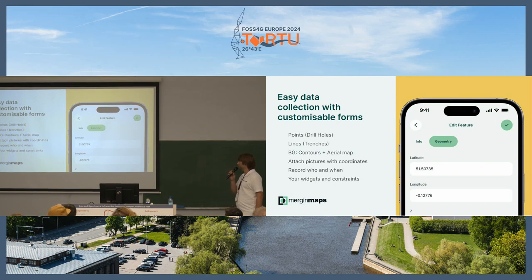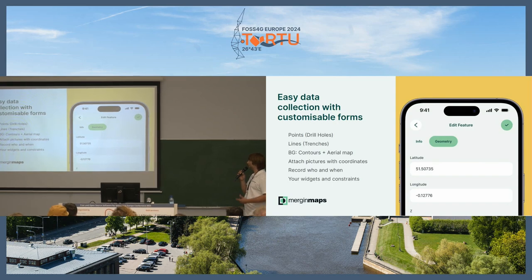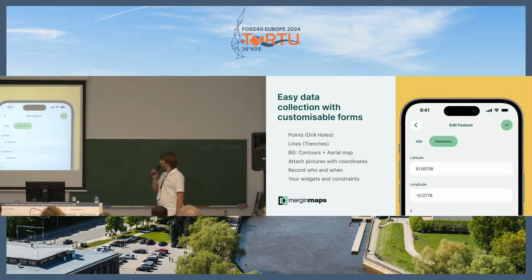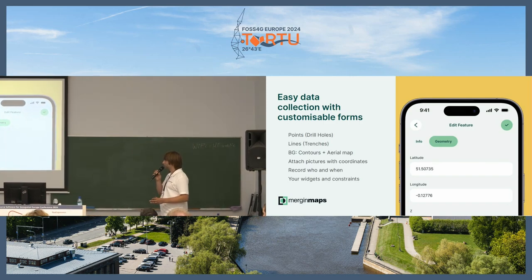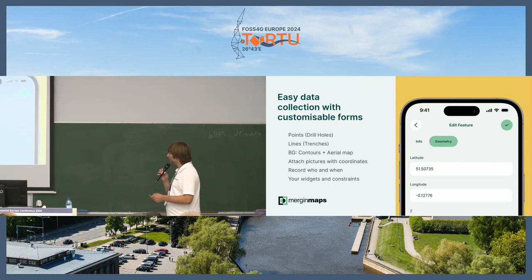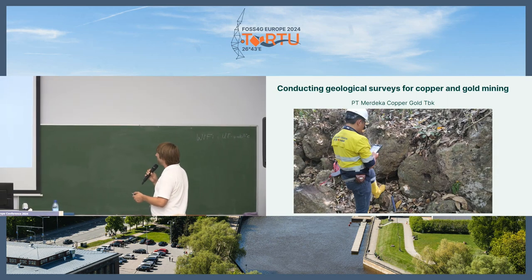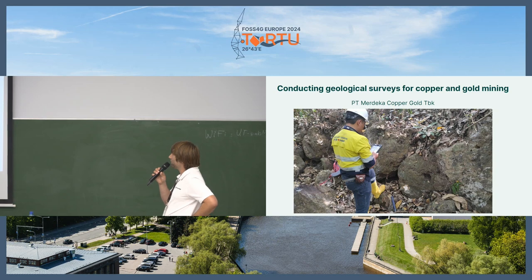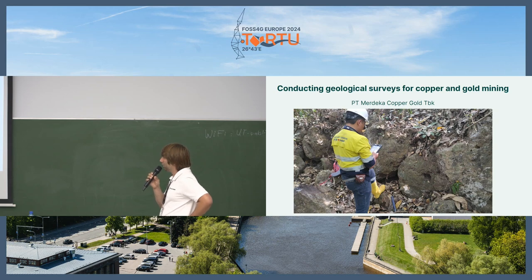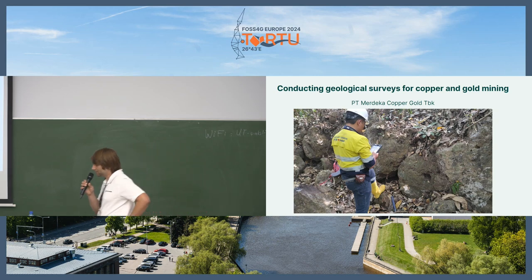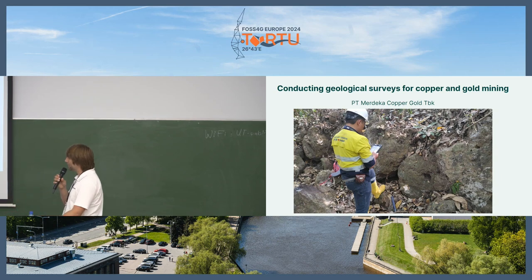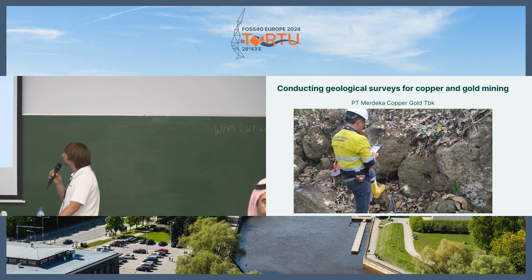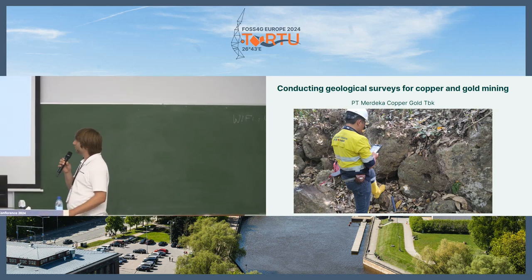Most importantly, you also get who did the measurement — you automatically get a username, when it was done, you have it geolocated, you can attach pictures, and you have additional background maps. For example, they have the contours map and some aerial maps of the area. This is a picture from the case study — you can see a drill hole here. This is the Mandraka copper gold company in Indonesia. They are working on a new area that should increase Indonesia's copper production by about 30% for 30 years of mine time. They are doing geological exploration of the area with Merging Maps.